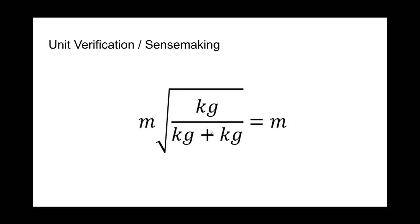To verify our units and make sense of the problem, we set the units for position as meters and for mass as kilograms. When we insert these units into the formula, the masses cancel each other out and we are left with meters on each side of the equal sign, which is what we want. The answer also makes physical sense, as we expect the final distance compressed to be smaller than the initial compression. This is because the impulse during the collision causes a decrease in velocity, which leads to a smaller final spring compression.